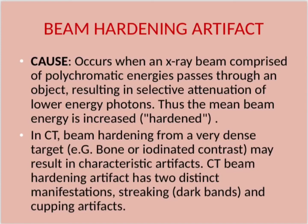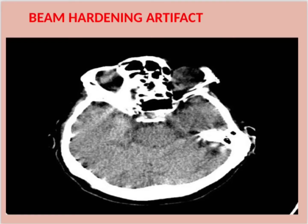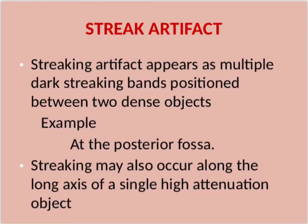CT beam hardening artifact has two distinct manifestations: streaking dark bands and cupping artifacts. Streak artifact appears as multiple dark streaking bands positioned between two dense objects — for example at the posterior fossa. Streaking may also occur along the long axis of a single high-attenuation object.